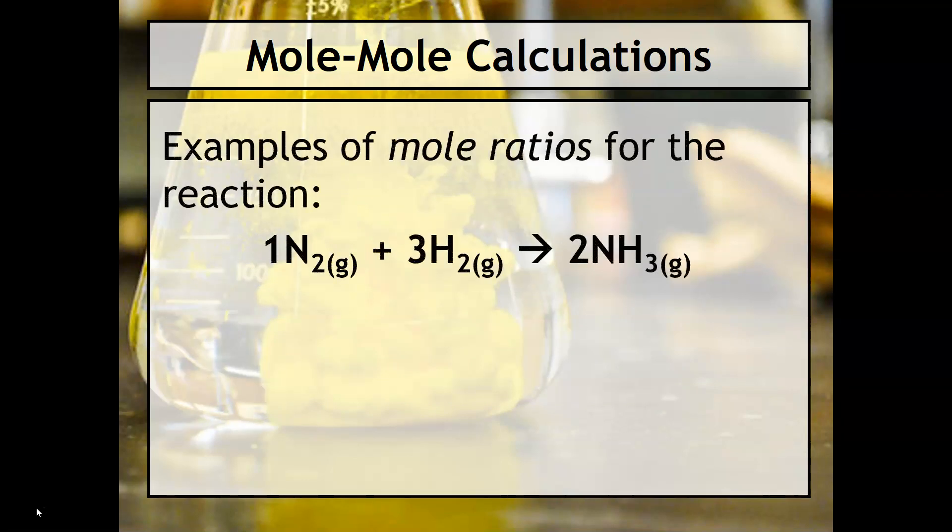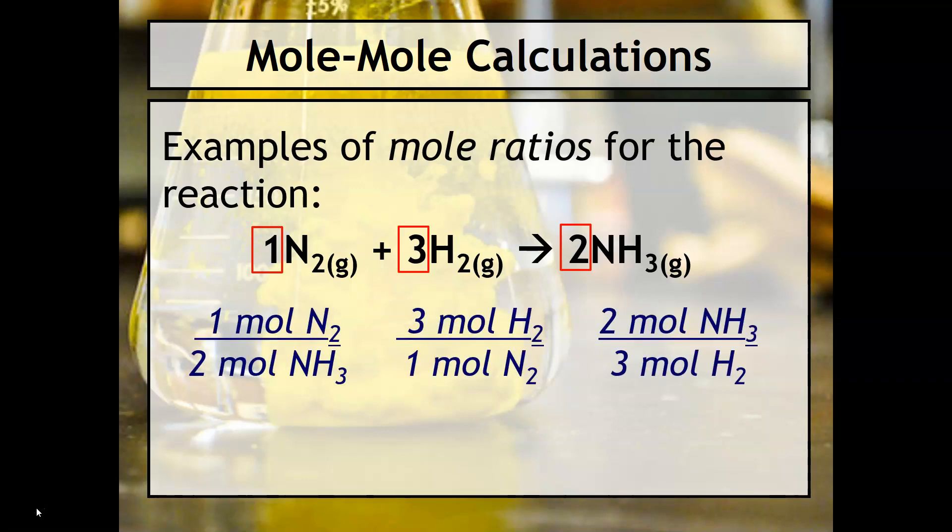So for example, in this equation we can have multiple mole ratios from the information given. What I have around the coefficients are red boxes. These are the numbers that you're going to use to make your ratios. For example, you could have 1 mol N2 over 2 mol NH3, 3 mol H2 over 1 mol N2, or 2 mol NH3 over 3 mol H2. It really just depends on what you're looking for and what you are given to start.